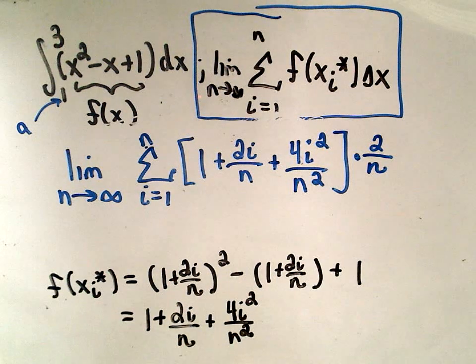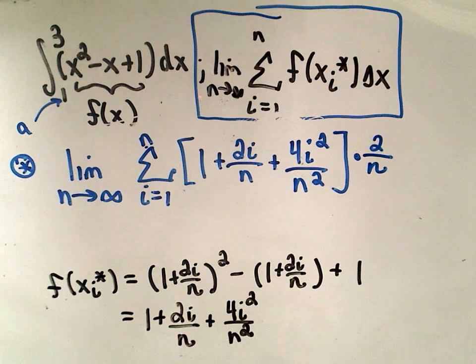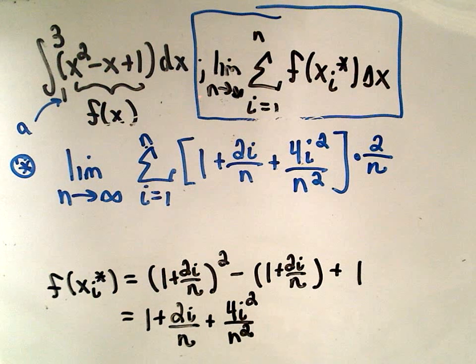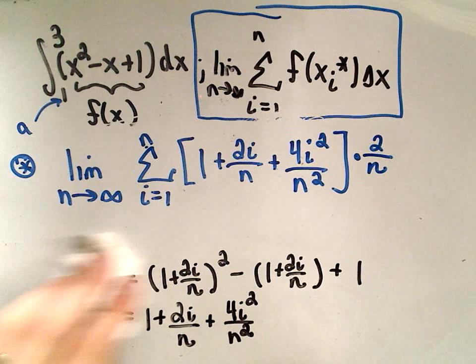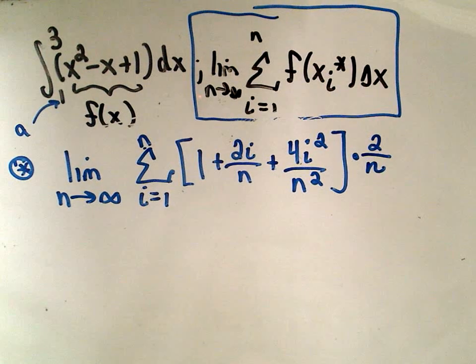So now we have rewritten our definite integral in terms of the definition using Riemann sum. I think I'm going to stop this video here. This would be the setup, this will be part 1. I'm actually going to compute this sum in another video. But if you just need to see how to set it up, that would be the first part of it. I hope this helps. If you want to actually see me compute this, dig around, it should be right nearby. Goodbye.